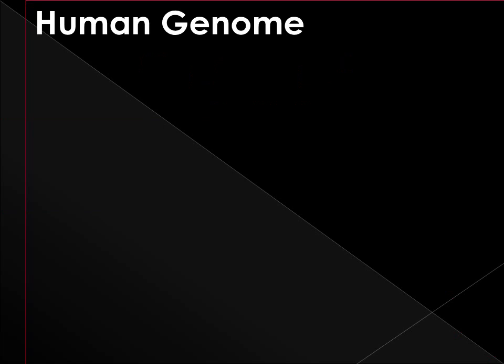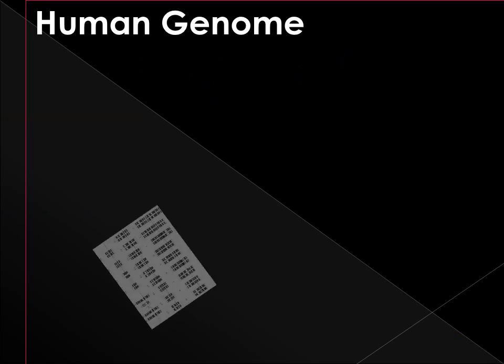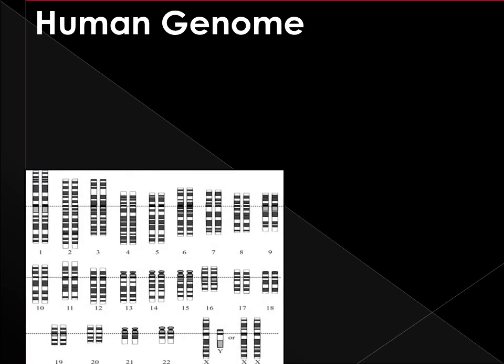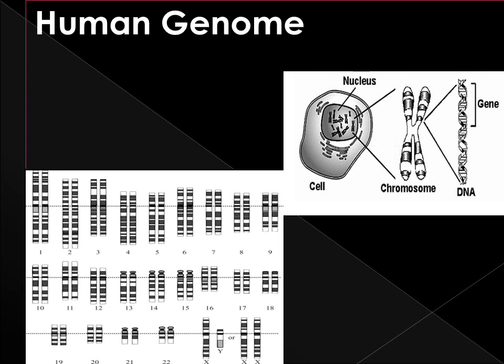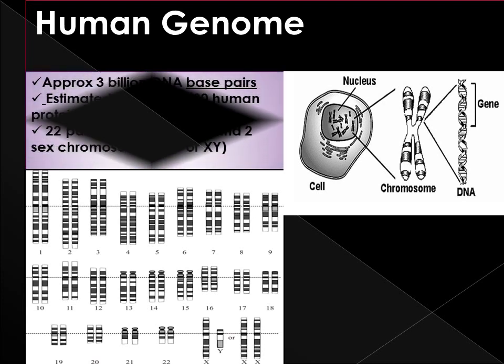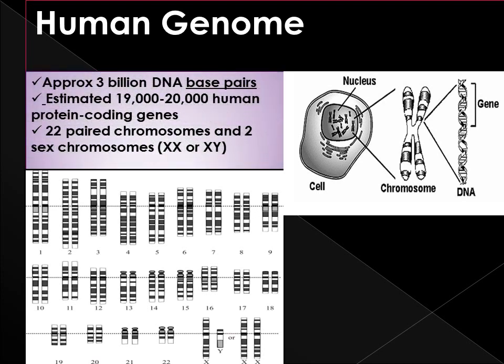Before starting the main concept, let's quickly review about the human genome. Humans have 23 pairs of chromosomes that are packaged by protein into a condensed structure called chromatin, which allows very long DNA molecules to fit into the cell nucleus. The human genome consists of approximately 20,000 protein-coding genes, each consisting of a sequence of bases which comprises the hereditary material DNA.